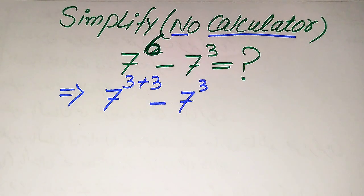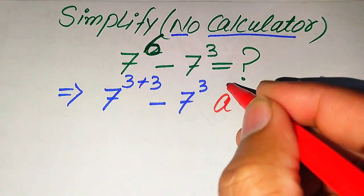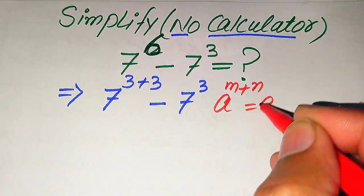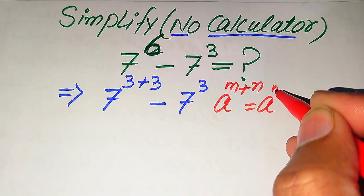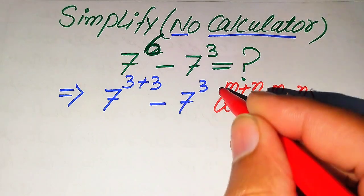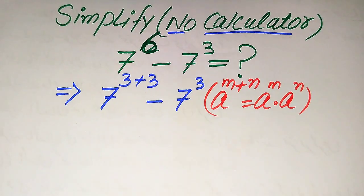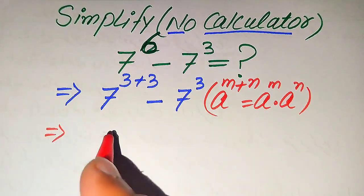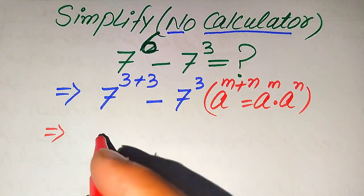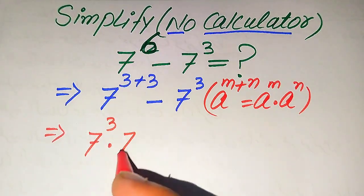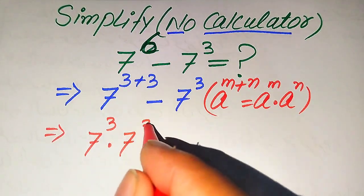In the next step we need to use the exponential rule. We apply the rule: a to the power of m plus n equals a to the power of m multiplied by a to the power of n. According to this rule of exponents, we break the exponent as 7 cubed multiplied by 7 cubed, minus 7 cubed.